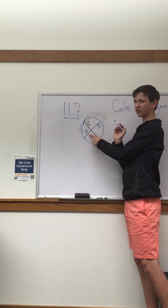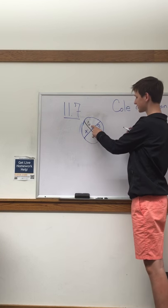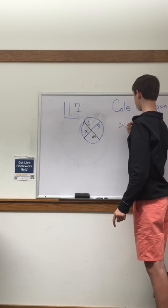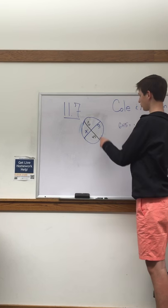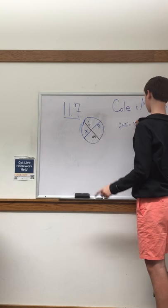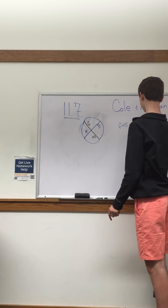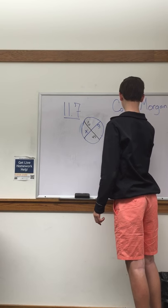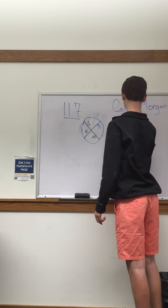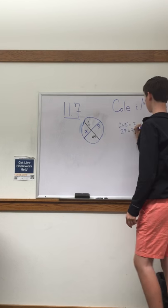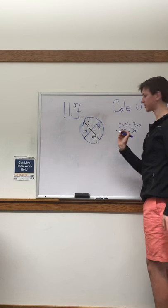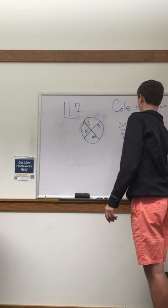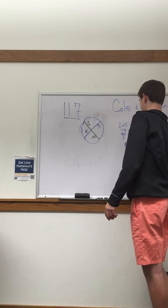So in this problem we're trying to solve for x. So we're going to take 6.5 times 4.5, and that's equal to 3 times x. So we'll simplify that, and that is 27 is equal to 3x. So then you just divide each side by 3, and x equals 9.